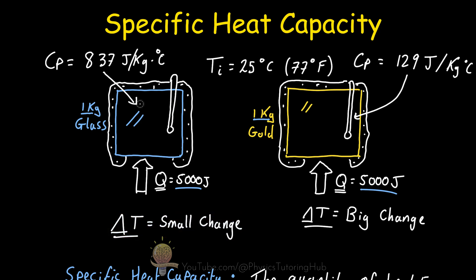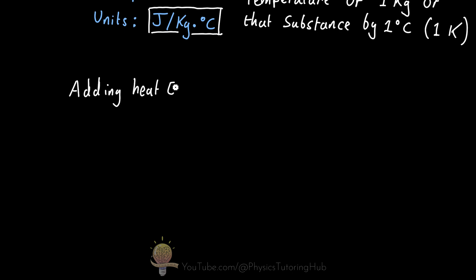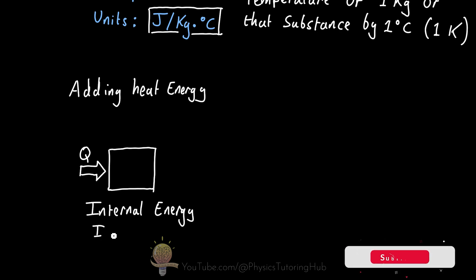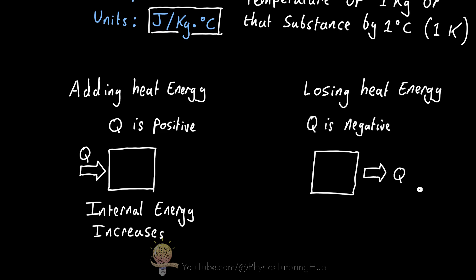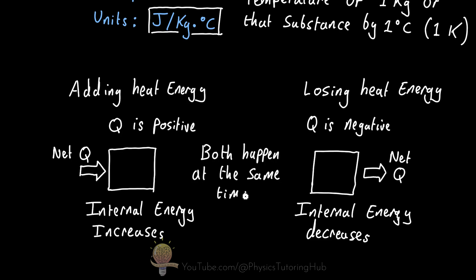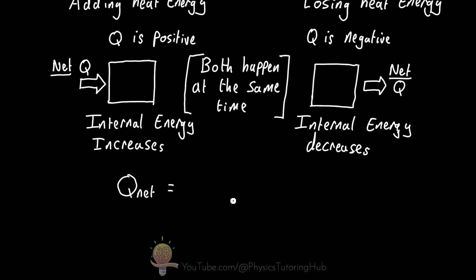The direction of heat transfer can happen in both ways. We can add heat energy to the substance, increasing its internal energy — in this case, the transfer of heat energy has a positive value. But the substance can also release heat energy back out into the environment, reducing its internal energy — in this case, the heat energy has a negative value. This is the convention used in physics: when energy is absorbed by a substance, Q is positive; when energy is released by a substance, Q is negative.